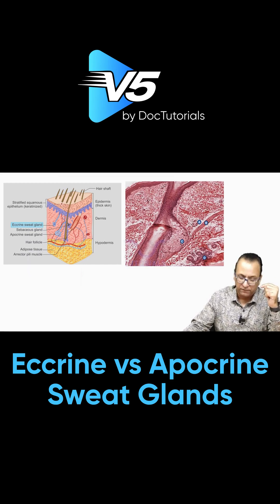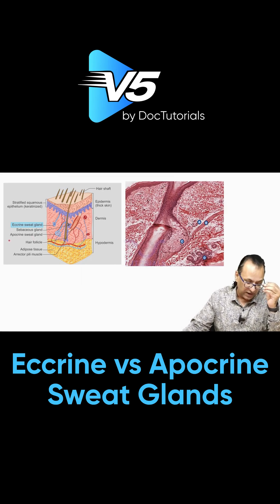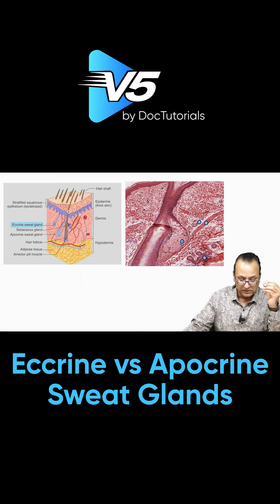As compared with the apocrine variety — the apocrine variety has secretions that are thick and viscous, and they are a rarely found sweat gland. Their duct opens into the hair follicle, so the secretions come out along with the hair follicle.